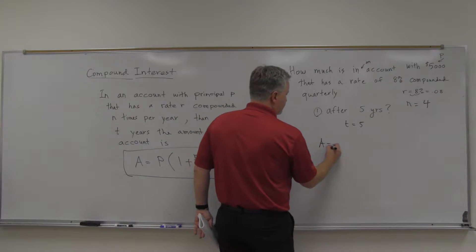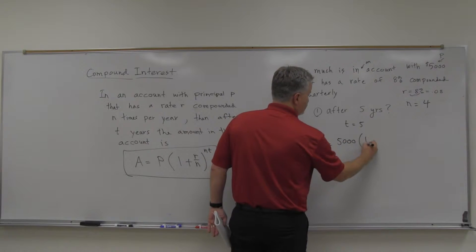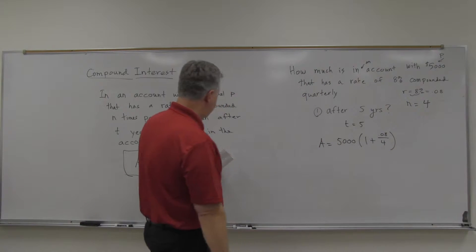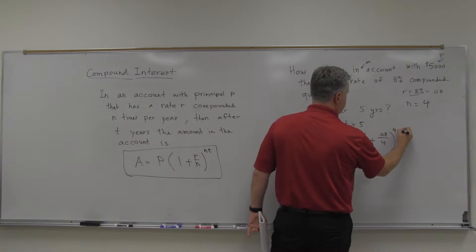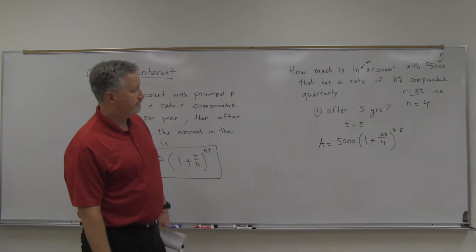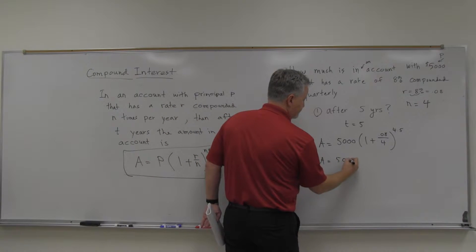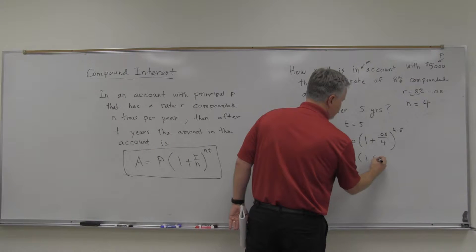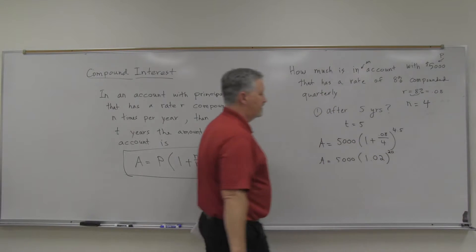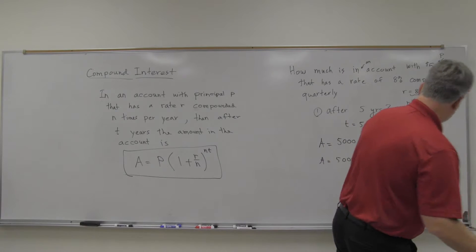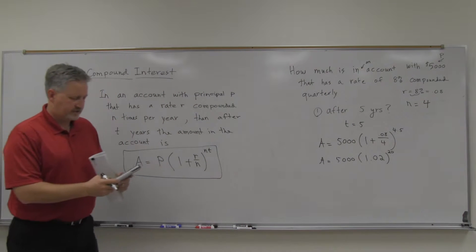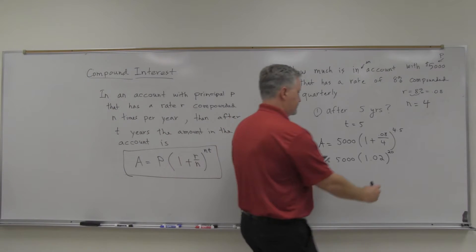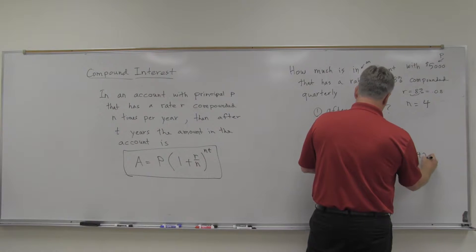So we've got A equals P, so it's 5,000, times one plus R, R is 0.08, divided by N, which is four. And you raise that to the NT, so that would be N is four times T is five. That's going to be the 20th power. What I recommend is go ahead and simplify this. 0.08 divided by four, that's 0.02. One plus 0.02, so that would be 1.02. And then that's to the 20th power. So that's going to give us, put that in, $7,429.74.